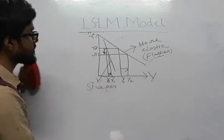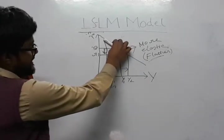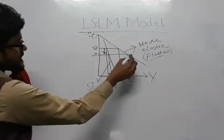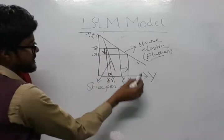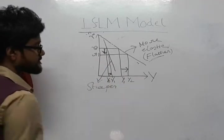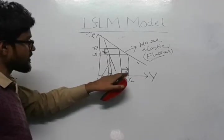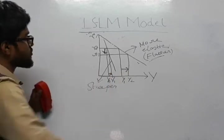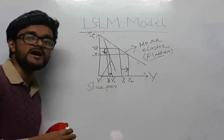So, what we are talking about here is the IS curve is flatter, one IS curve is flatter, another is steeper. So, in case of flatter IS curve, when interest rate falls, the income rises more than what it is in the case of a steeper IS curve. So, this is the elasticity of IS curve.